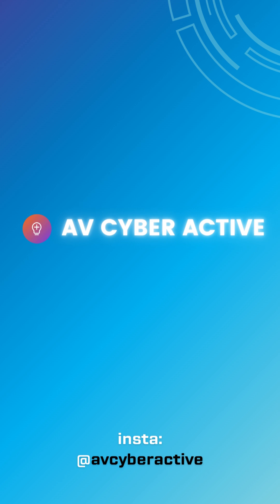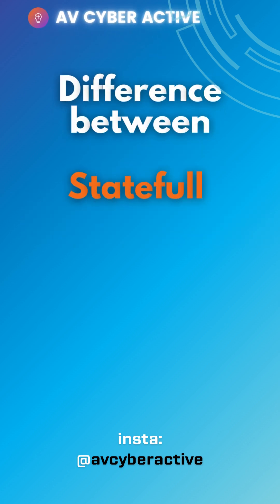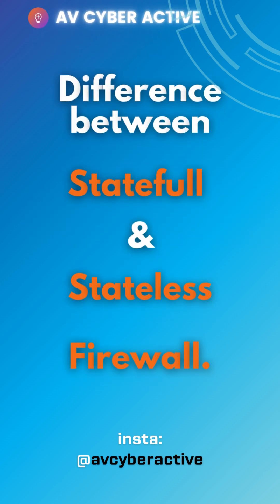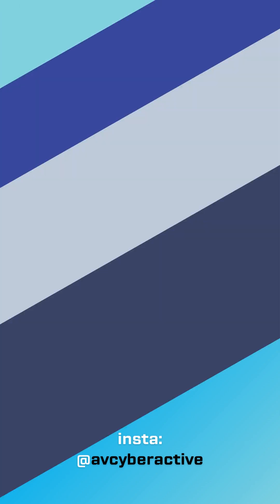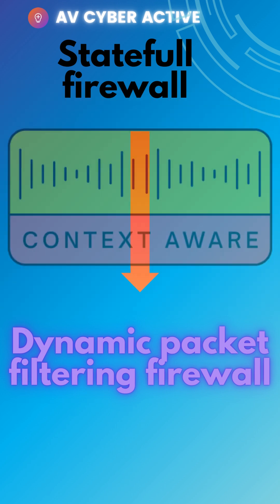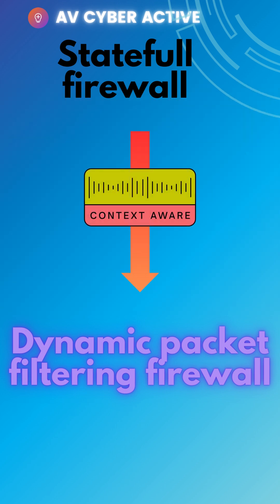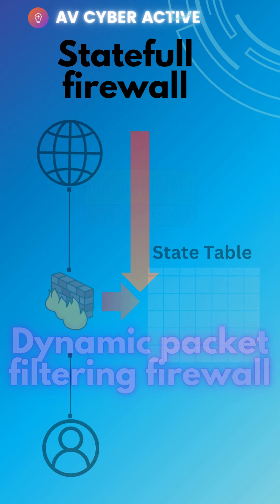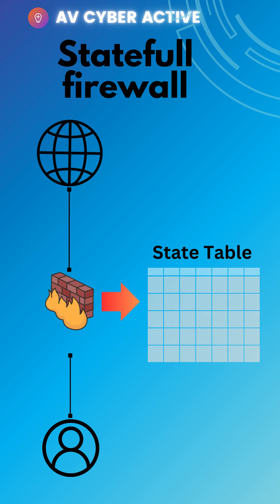What's the difference between stateful and stateless firewall? A stateful firewall, also known as a dynamic packet filtering firewall, monitors the state of active connections and makes decisions based on context of the traffic. It keeps track of the state of the network connections and enforces rules based on the connections' current traffic.